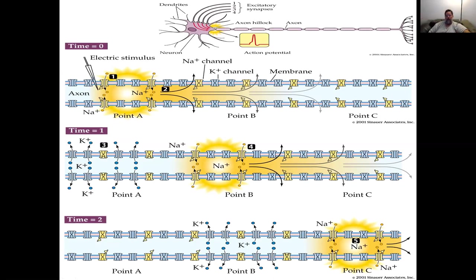Now we're going to zoom in and look at the axon hillock. You can see that the sodium channels open if the threshold is reached, and then the signal starts traveling down the axon. The sodium travels down, opens up sodium channels, and continues down the axon. At time zero, time one, time two — you can see what happens as it travels. The sodium opens up other sodium channels further down the axon, allowing sodium to enter.